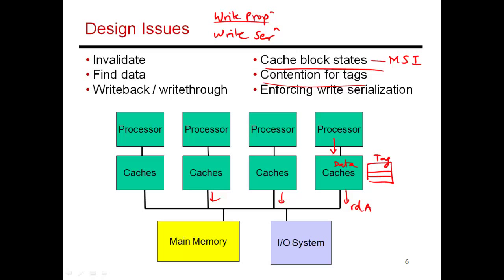Write propagation says that when you do a write, everyone sees it. When you do a write, you first have to have the block in modified state, so you do a broadcast and everyone knows you're doing a write. When someone does a subsequent read, it's your responsibility to provide the latest copy of data. This ensures that the write will eventually get propagated to everyone else. If no one reads it, at some point the block gets evicted from cache, and that's when main memory gets updated. Then if someone else reads the value, they'll get the correct value from main memory.